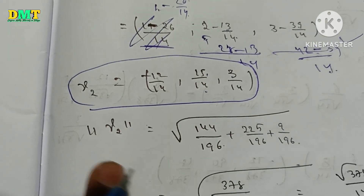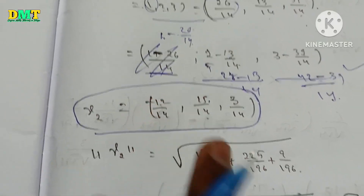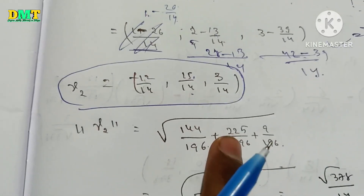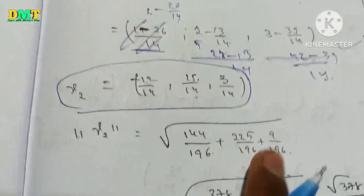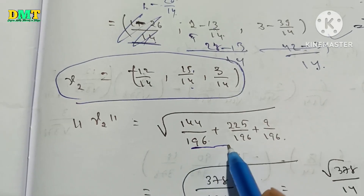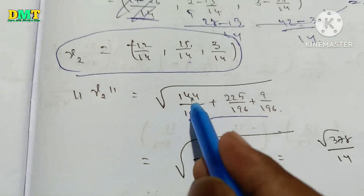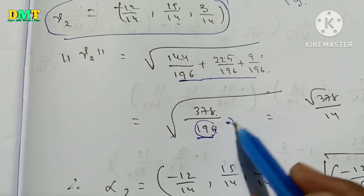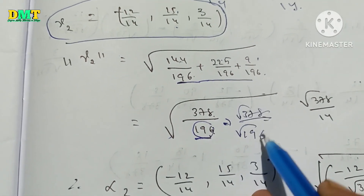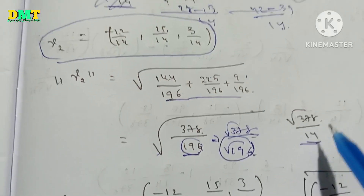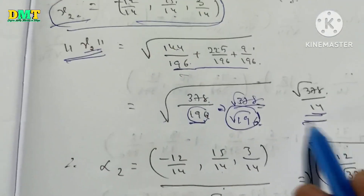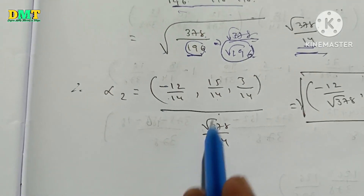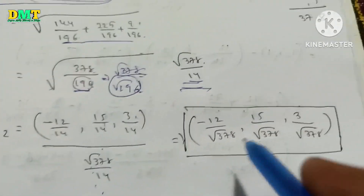So if you write gamma2 value, then norm gamma2 value. Norm gamma2 is equal to root of: minus 12 squared over 14 squared, plus 15 squared over 14 squared, plus 3 squared over 14 squared. That is root of (144 + 225 + 9) / 196, which gives root 378 / 14. Because gamma2 and norm gamma2 tell us alpha2 is equal to gamma2 divided by norm gamma2. So alpha2 is equal to (minus 12/root378, 15/root378, 3/root378). This is the alpha2 value.